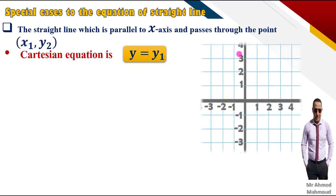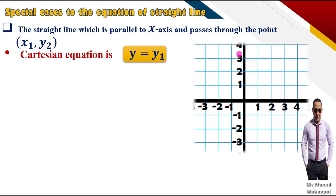For example, if we have a coordinate axis and we have a point B which is (2, 3), so x1 = 2 and y1 = 3. If we have a straight line parallel to the x-axis, the equation of this straight line is y = y1, or y = 3, because y1 here is 3.